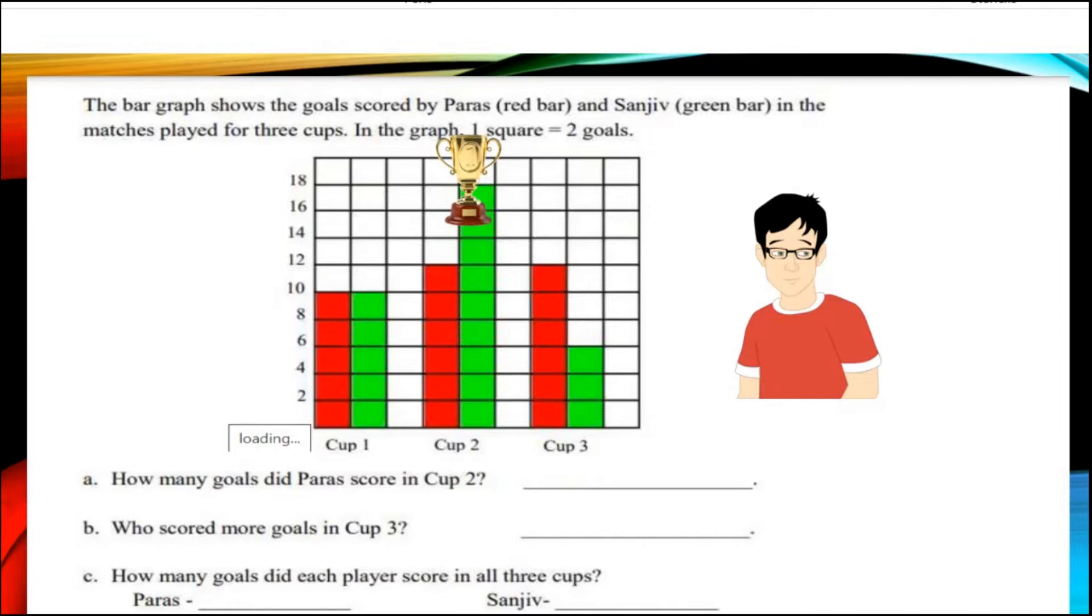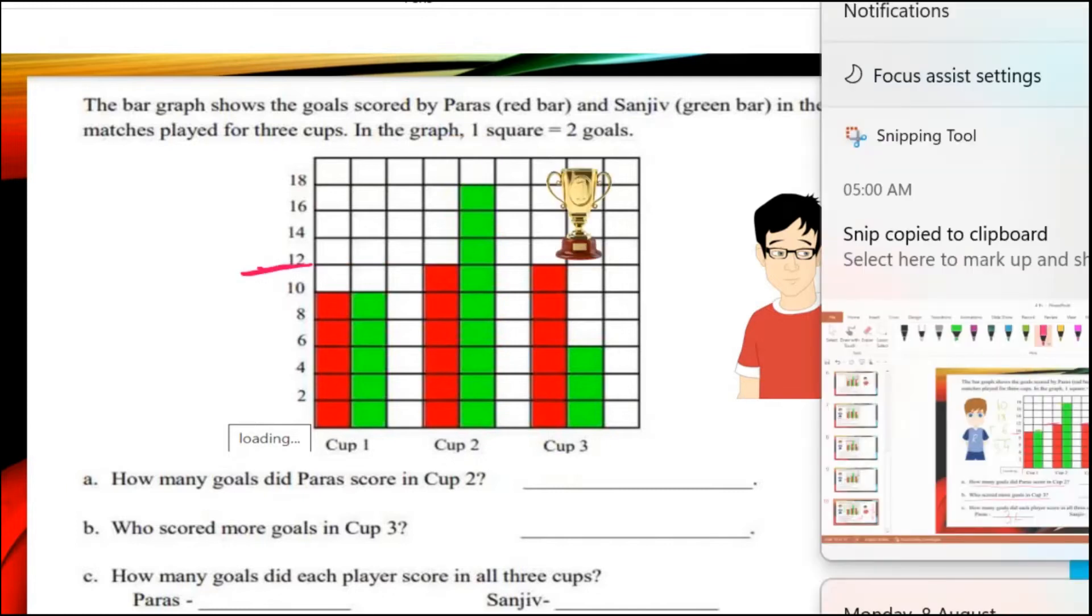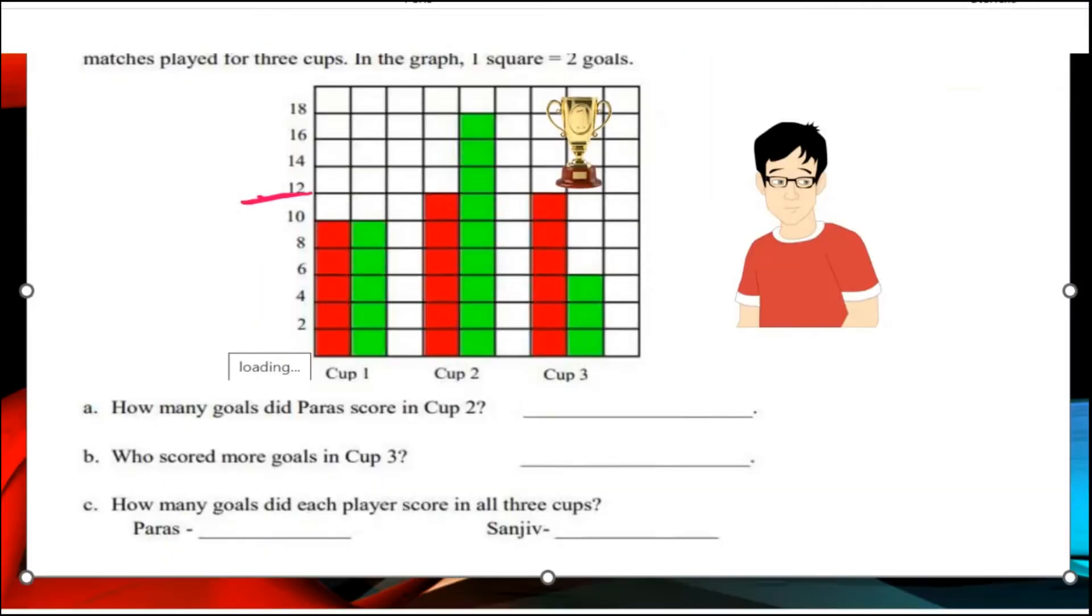For the second cup Paras achieved 12 goals. As you can see in the picture he has achieved 12 goals. In the first cup he achieved 10, in the second cup he achieved 12, and in the third cup he achieved again 12. Let us list out these scores scored by Paras.